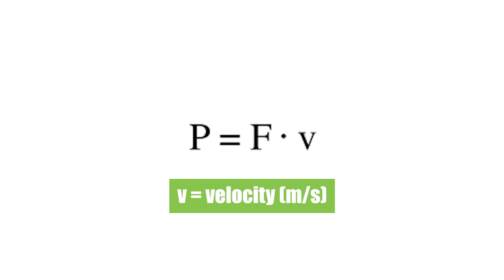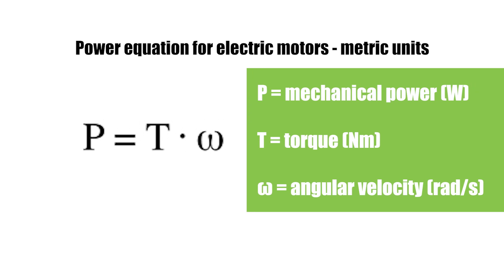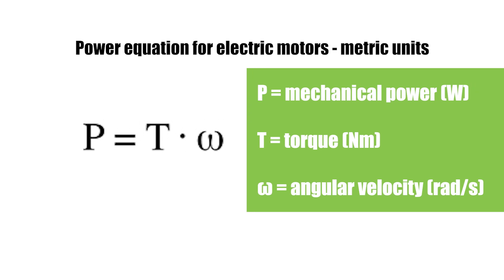Electric motors produce torque rather than force through rotational motion rather than linear distance, so power is equal to torque multiplied by angular velocity.